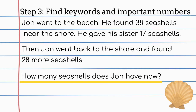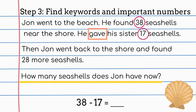Next, I'm going to look for keywords and important numbers. 38 is important because it tells me how many seashells John has. It says he gave his sister 17. Gave is a keyword because when you give something away, you don't have it anymore, so this word helps me know I will be subtracting. The number 17 is important because that's how many seashells he gave his sister. I'm going to stop here because I can see that I already have an equation I need to solve. John found 38 seashells and he gave his sister 17. My equation is 38 minus 17.